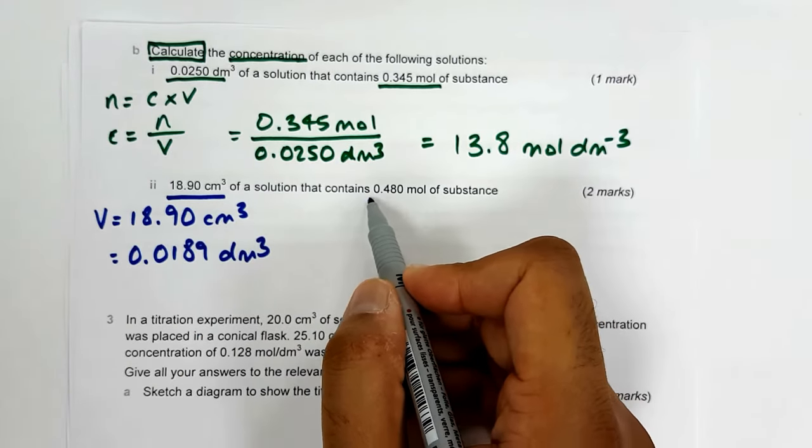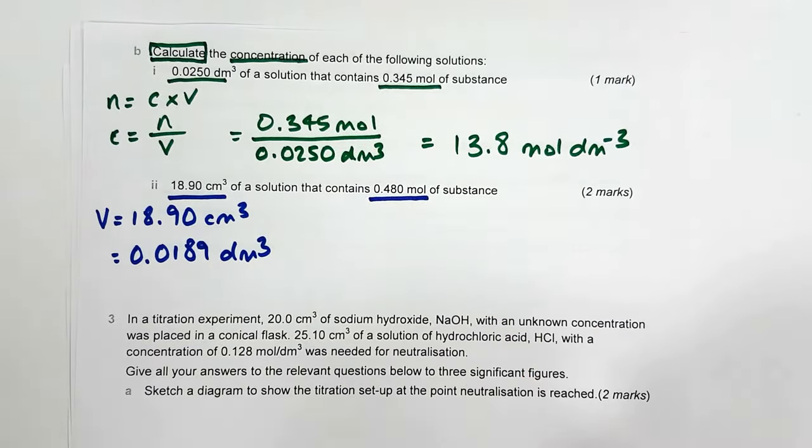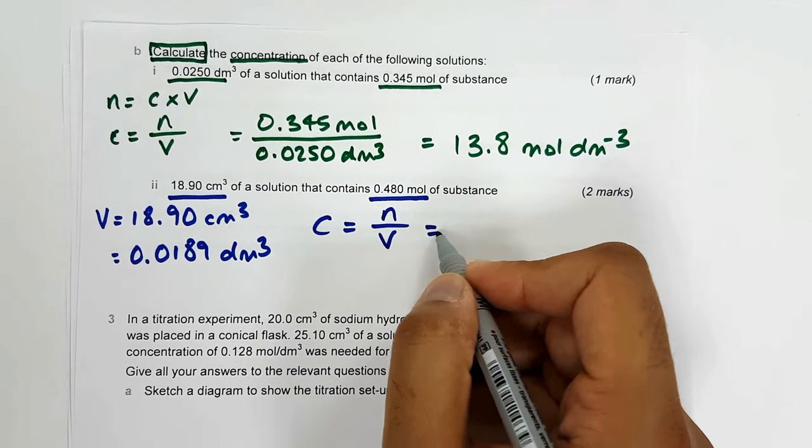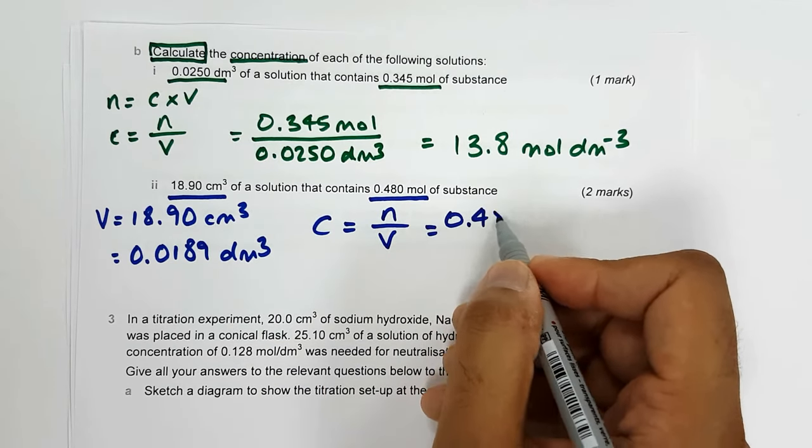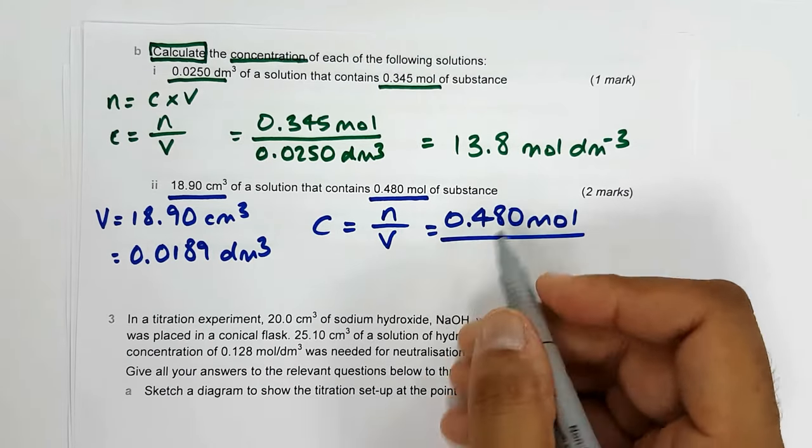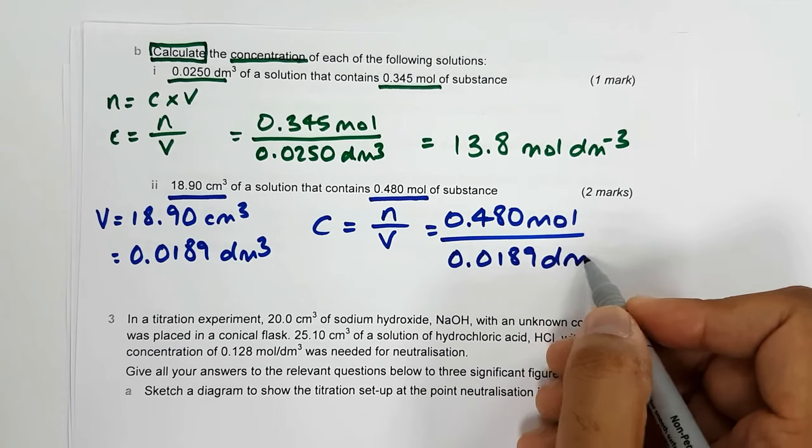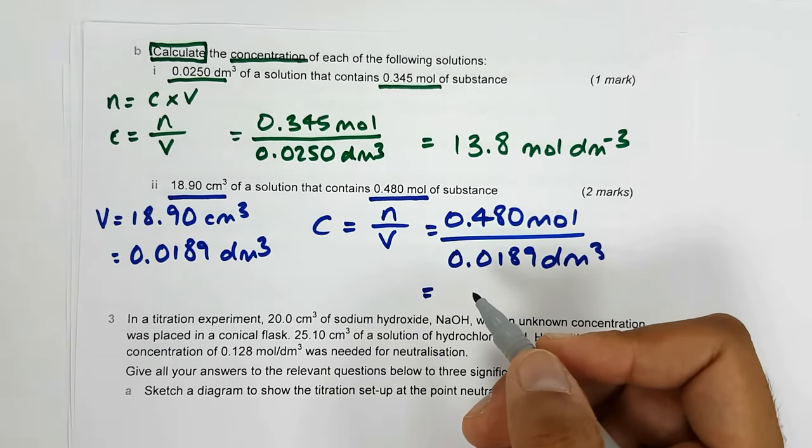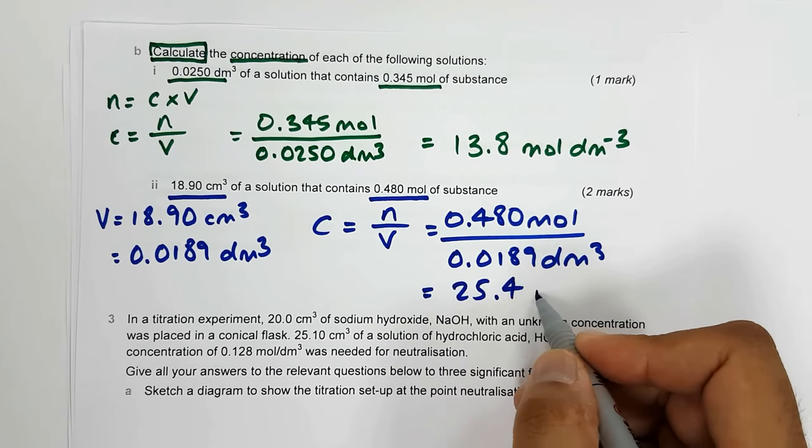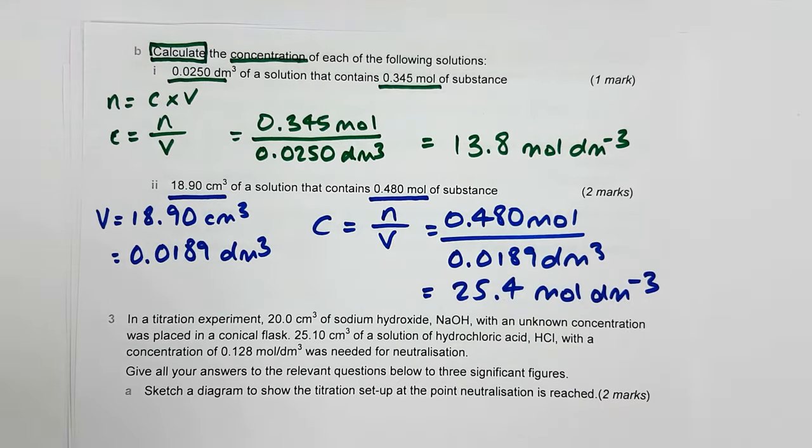The solution contains 0.480 moles of a substance, and we're working out the concentration. So c equals n over v. Plug in the values: 0.480 moles and 0.0189 dm cubed, and you get 25.4 moles per dm cubed. That's simple.